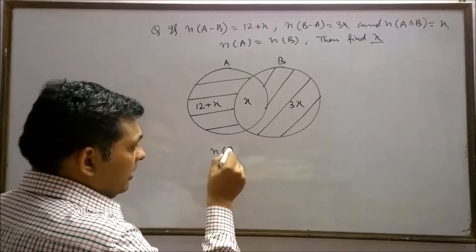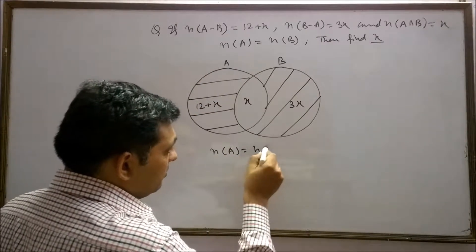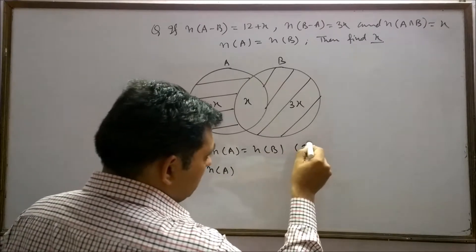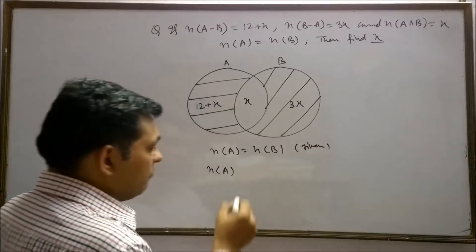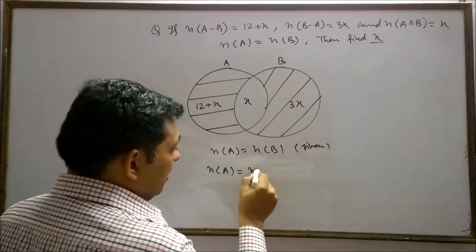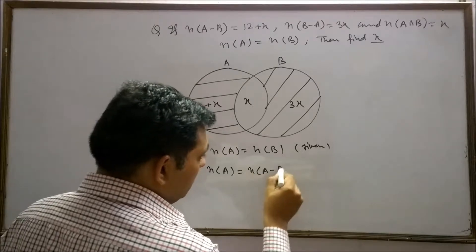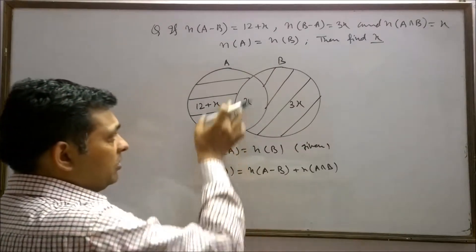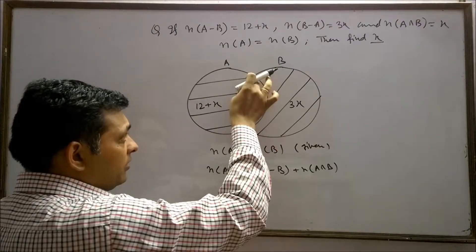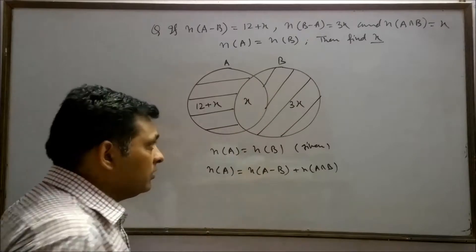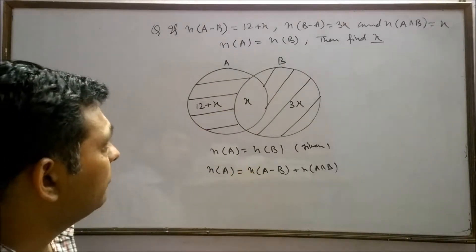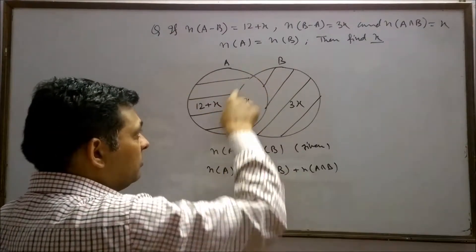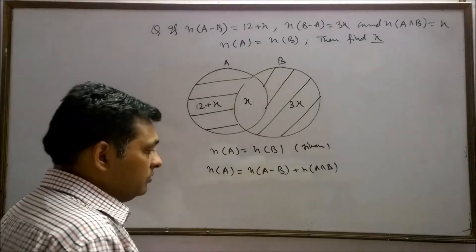Question is n(A) is equals to n(B). n(A) is equals to n(A-B) plus n(A∩B). n(A-B) is only A. n(A∩B) is a set which contains elements of A and B. If we combine this region and this part, we will get set A.